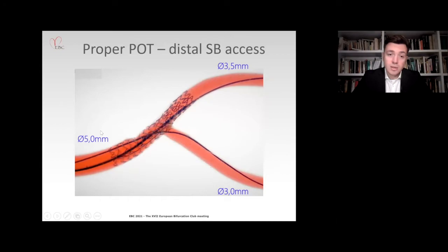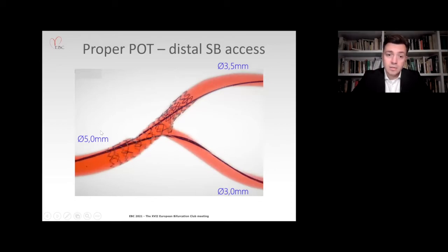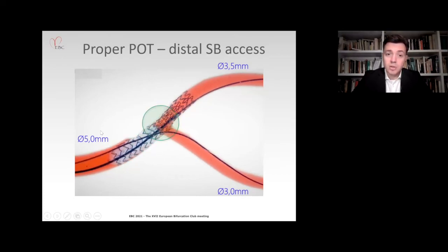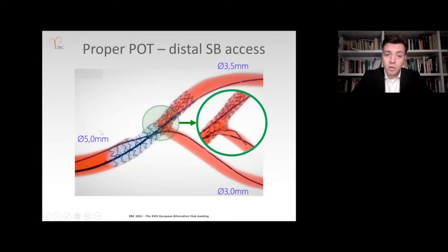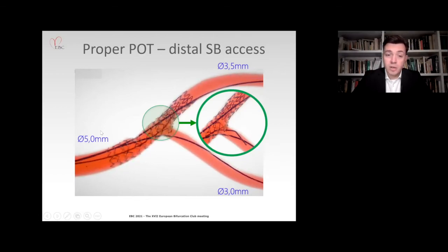As you can see on this Bench test, proper POT may require two balloon inflations. We need to take care of the proximal edge of the stent, and we need to be precise at the carina. After performing optimal POT, the wire still preferably goes through the proximal cell; however, we have given ourselves the chance of rewiring through the distal part, as you can see now. Performing POT requires meticulous proceeding and may require more than one inflation. We need to be precise at the proximal edge, but also at the distal edge of the bifurcation core. Only then can we allow ourselves the opportunity to have distal side branch access.